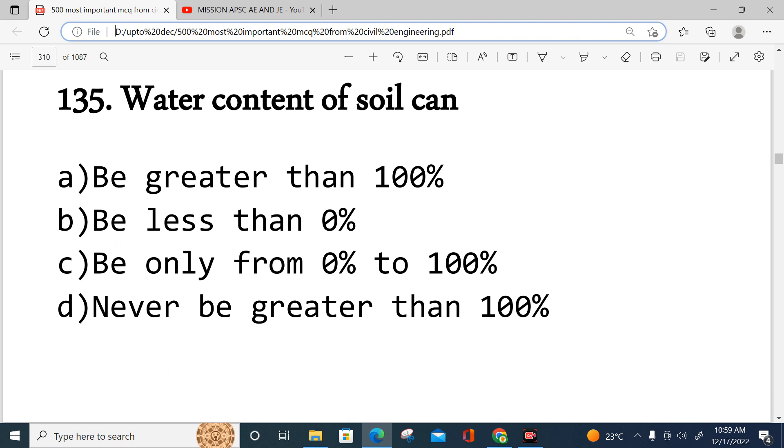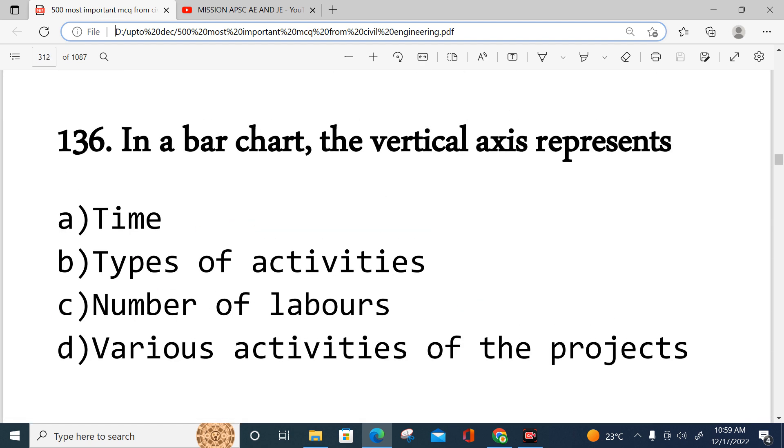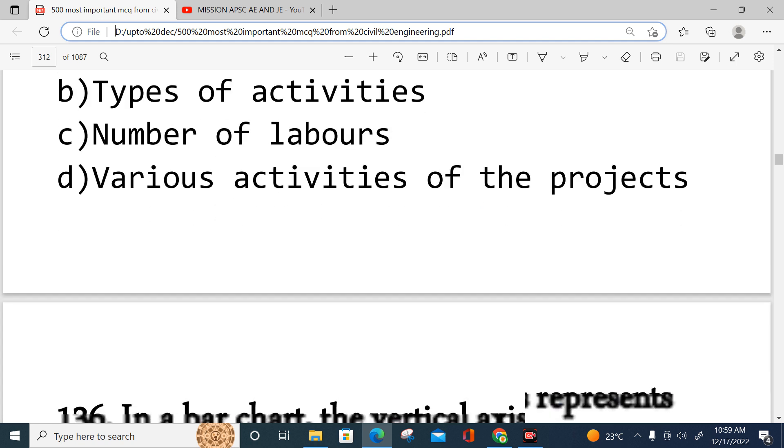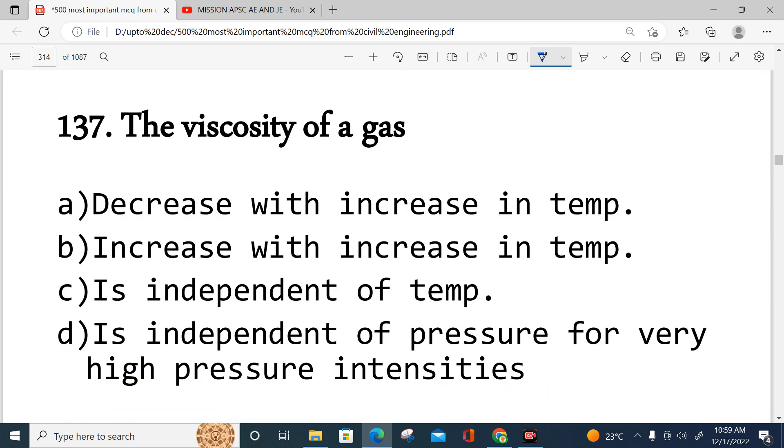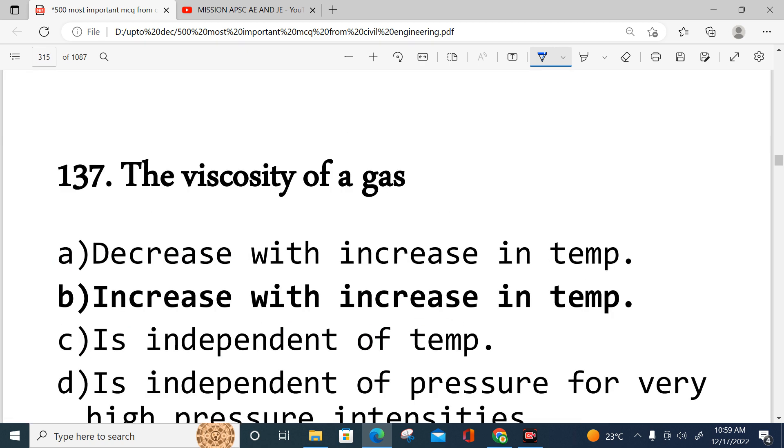In a bar chart, the vertical axis represents type of activity, and the horizontal axis represents time. The viscosity of a gas - when temperature increases, randomness increases, which will ultimately lead to increased viscosity. So option B is correct.